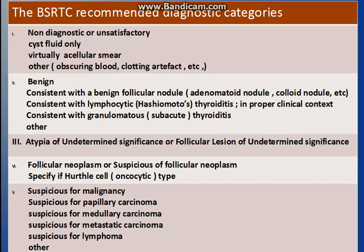The second category is benign. In this, benign follicular nodule and thyroiditis cases are put. The third is AUS — atypia of undetermined significance — or follicular lesion of undetermined significance. The fourth category is follicular neoplasm or suspicious for follicular neoplasm, in which follicular adenoma or follicular carcinoma are placed.